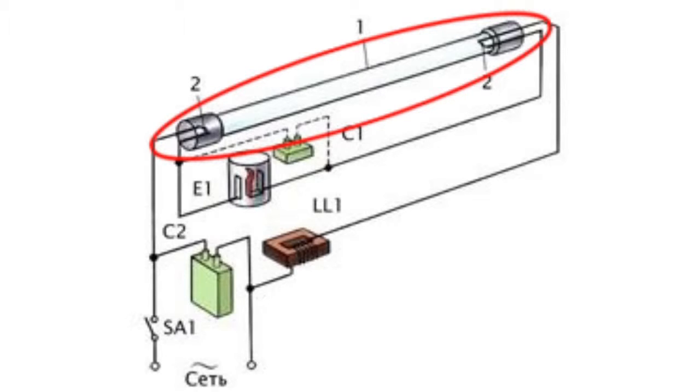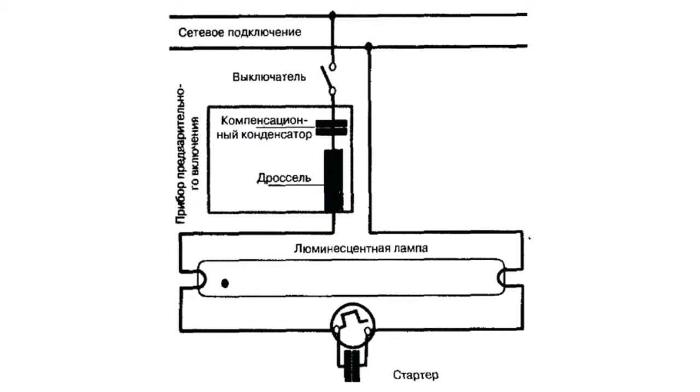The increased current heats the electrodes of the luminescent lamp and they start extracting electrons. This is the preparation for switching the lamp.